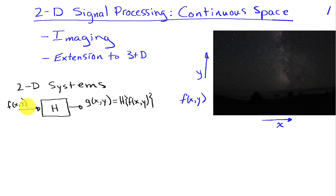So if I have a 2D system, I can put F of X comma Y into it through some system H. And then that's going to give me G of X comma Y, which is just the system acting on the input image.